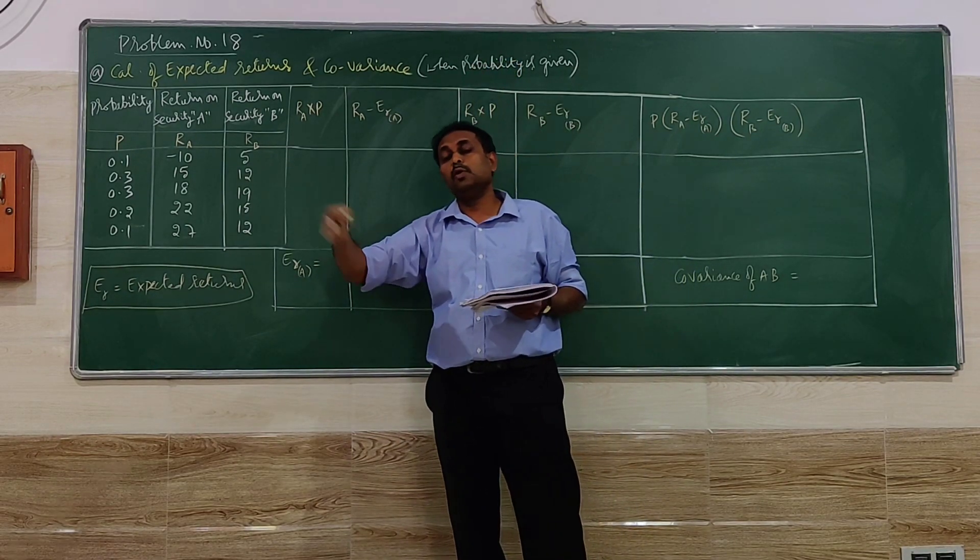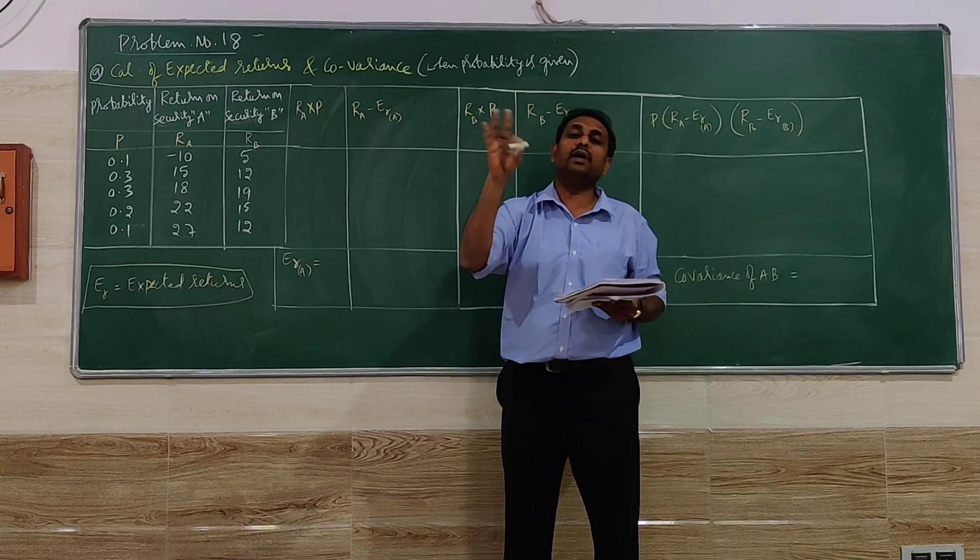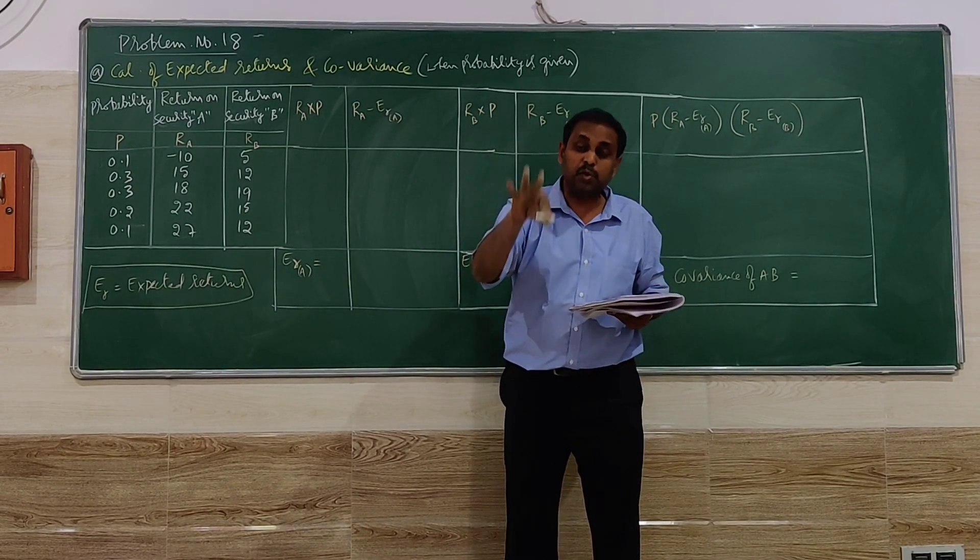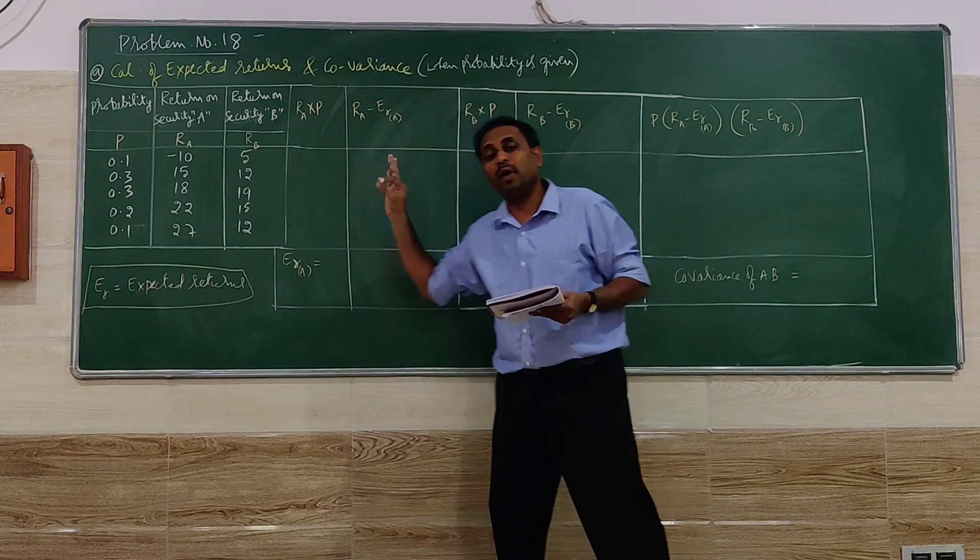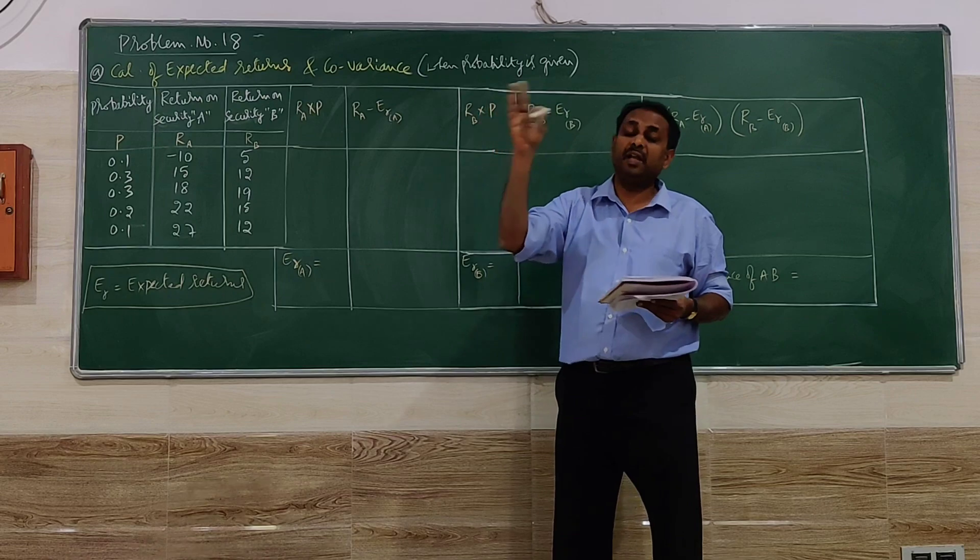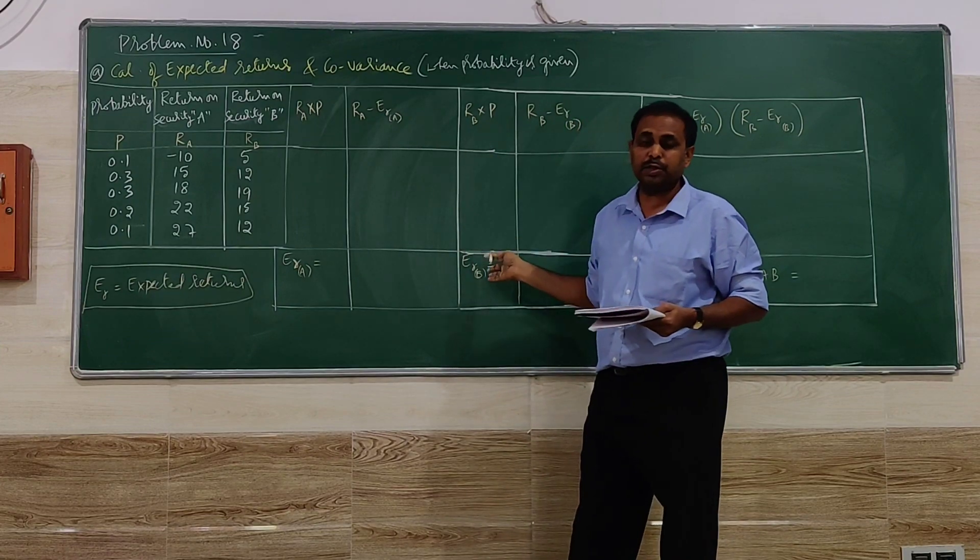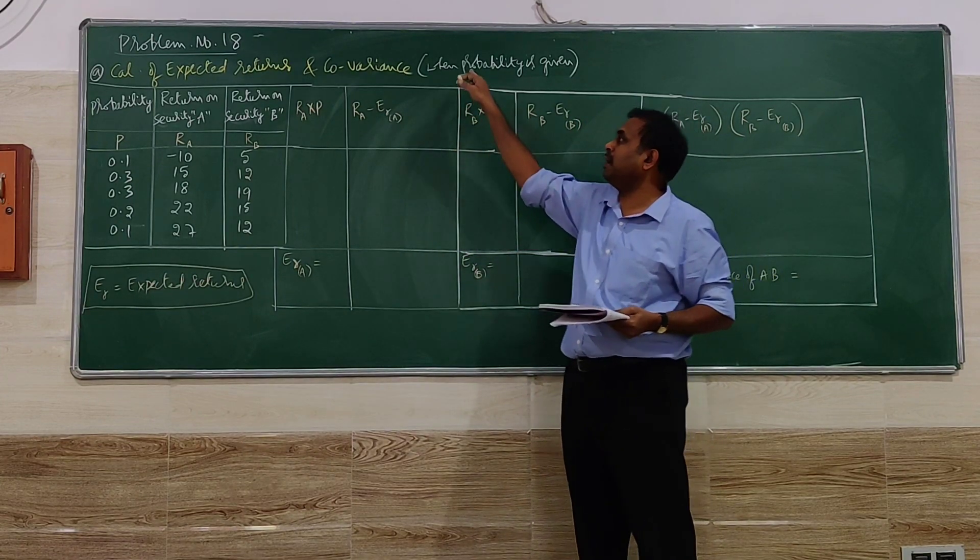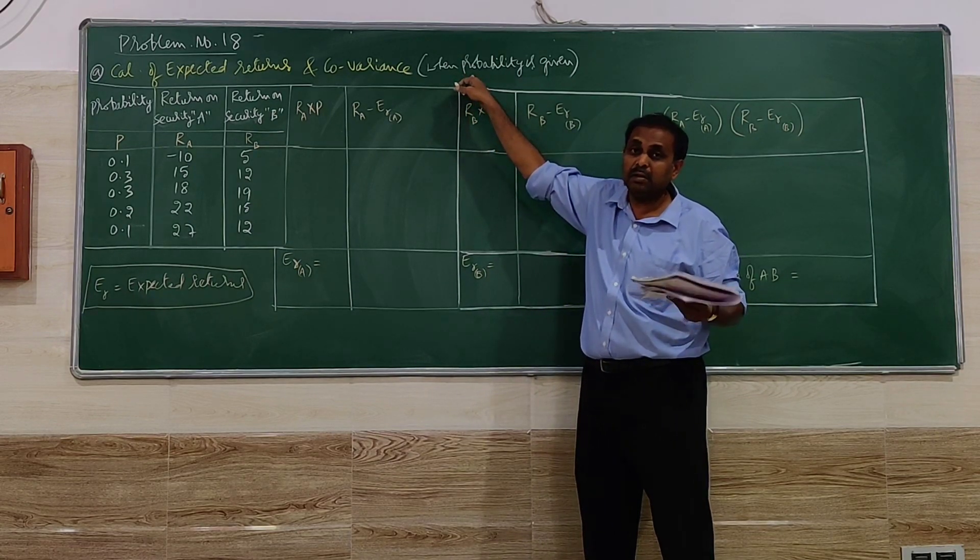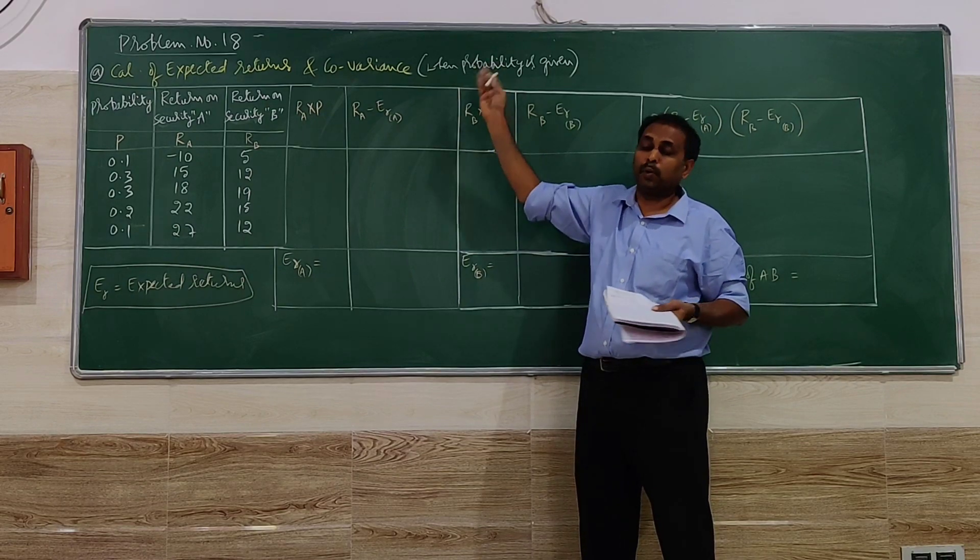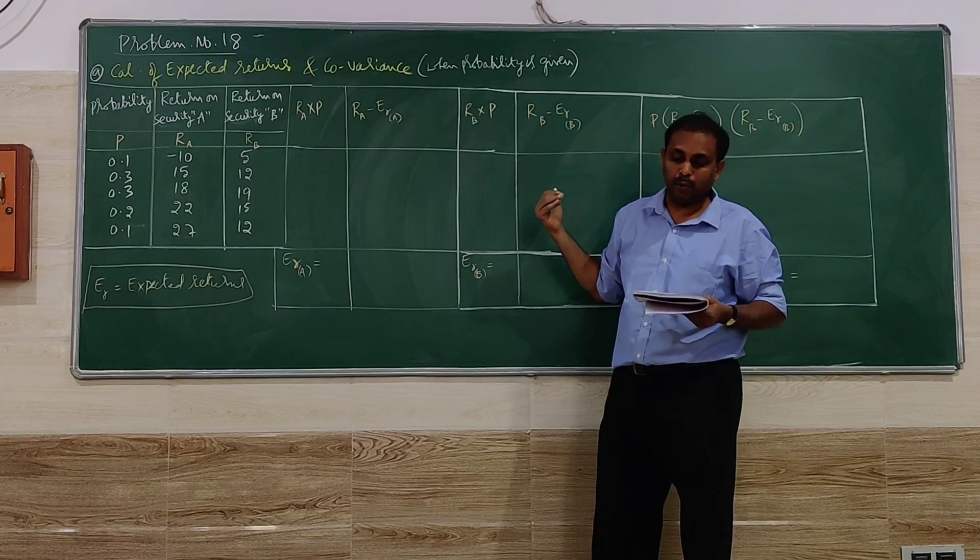We had in the earlier problems covariance when probability was not given, so the question looks the same, but in this situation we have to identify that is more important for going for further steps. So first identify when the question comes, calculation of covariance, whether probability is given or not given. Probability not given, different formula; when probability given, this is the method which we are going to see now.